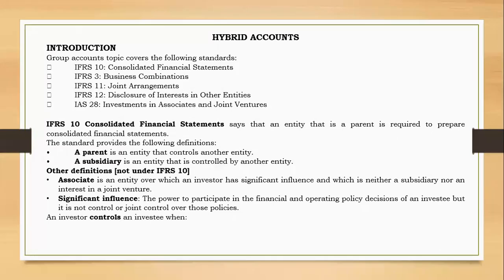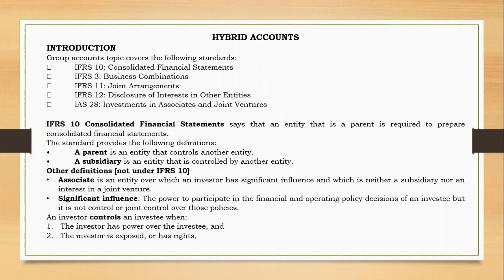An investor controls an investee when three conditions are met. First, the investor has power over the investee. Second, the investor is exposed to or has rights to variable returns from its involvement with the investee. Third — which we will come to — the investor has the ability to affect those returns through its power.